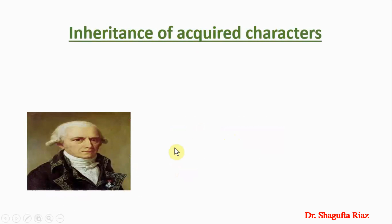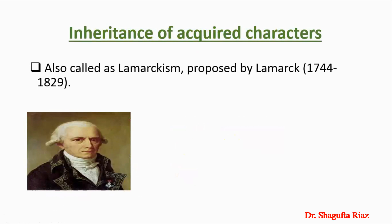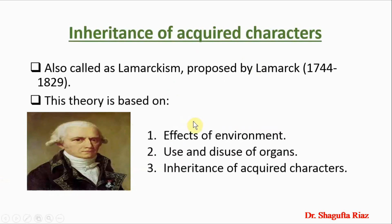The first theory was proposed by Jean-Baptiste de Lamarck, a great French zoologist and pioneer evolutionist before Darwin. He proposed the theory of Inheritance of Acquired Characters, commonly called Lamarckism. His theory was based on three points: the effects of environment, use and disuse of organs, and inheritance of acquired characters — which he believed are the foundation of evolution in both plants and animals.